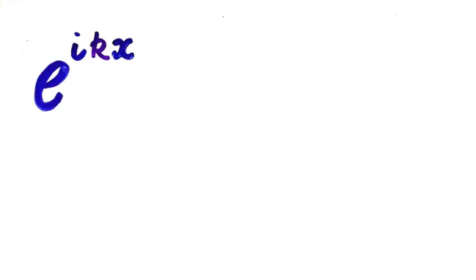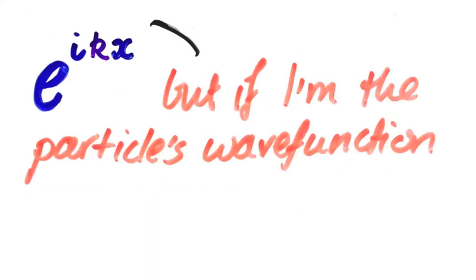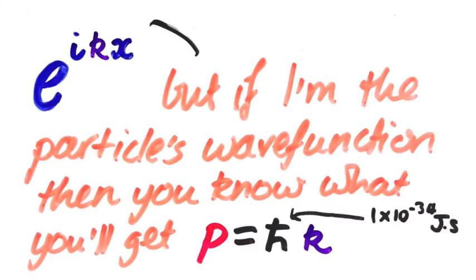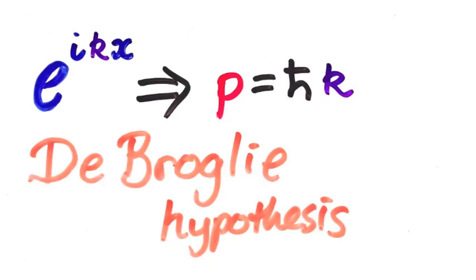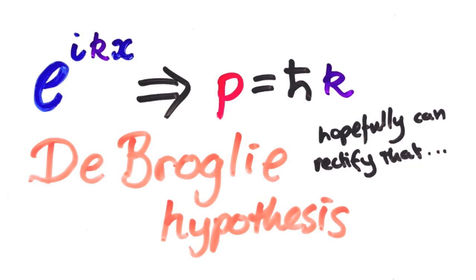What's so special about having a position wave function like this? Usually if we try to measure the momentum of a particle, we're uncertain about what value we'll get. However, the weird thing is that if a particle's position wave function is a complex exponential like this, then we know without a doubt exactly what momentum we'll get. The value we'll get is k times h-bar. This is called the de Broglie hypothesis, and honestly this is the only mysterious part of this episode. The de Broglie hypothesis is all you need to make the uncertainty principle happen. I don't know why it's true — for now we can just take it as an experimental fact, but hopefully in the future we'll come back to it.